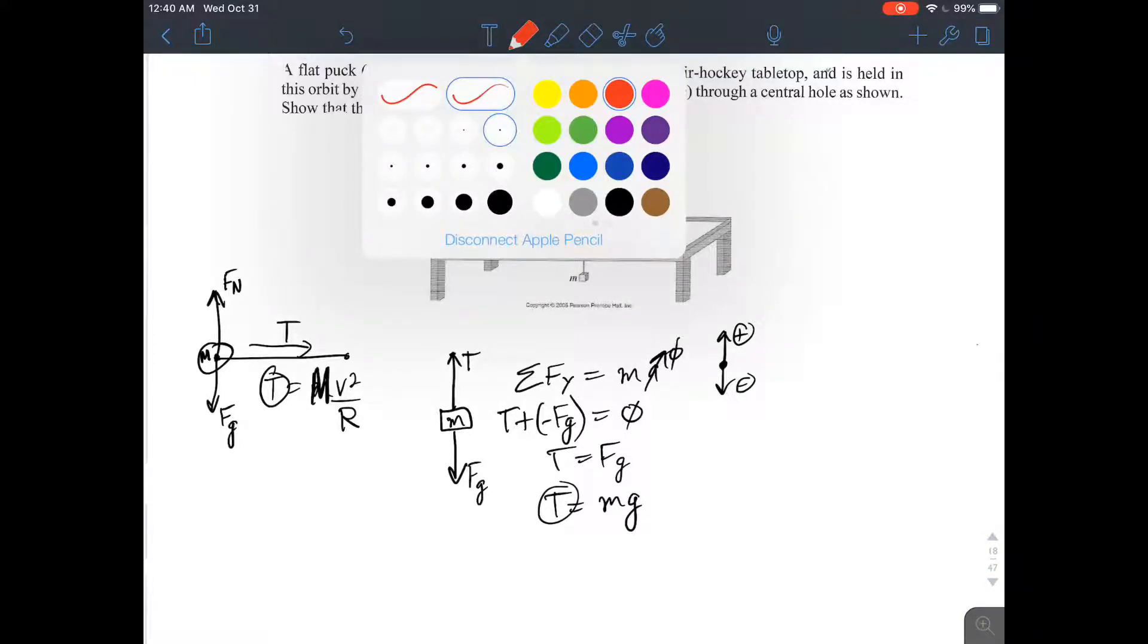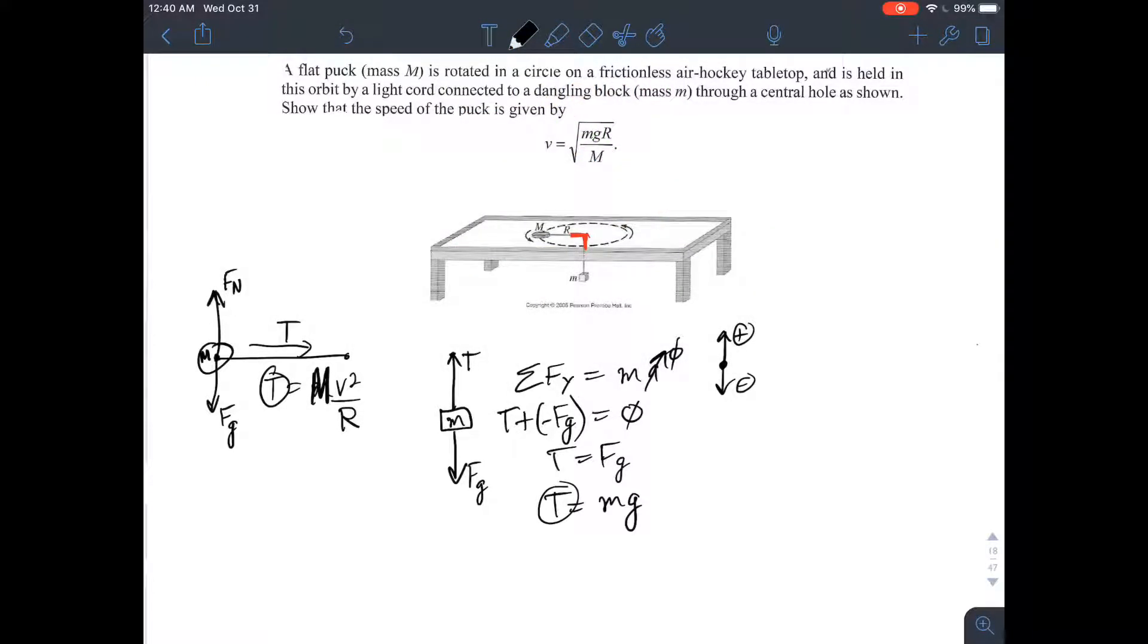Knowing that, it should be fairly simple to say mg equals Mv squared over r. Notice the m's are different, lowercase m, uppercase M. Move things around, you get mgr equals capital M v squared. Move it around a bit more, and you get mgr over capital M equals v squared. Move it around a bit more, and you get square root of mgr over M.